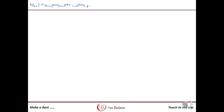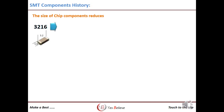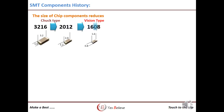Machine manufacturers are continuously making improvements in placement machines as component sizes are reducing. When the component size was 3216 and 2012, the chuck type pick and place was introduced. For component sizes from 1608 and 1005, the vision type rotary and gantry machines came into existence.